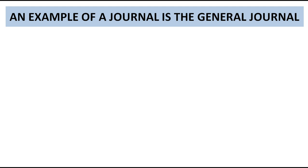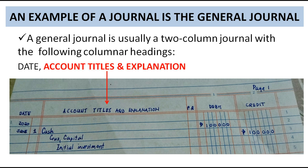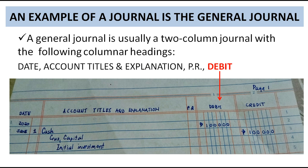An example of a journal is the general journal. A general journal is usually a two-column journal. We have the first column and the second column with the following columnar headings: the date, account titles and explanation, PR, debit and credit.